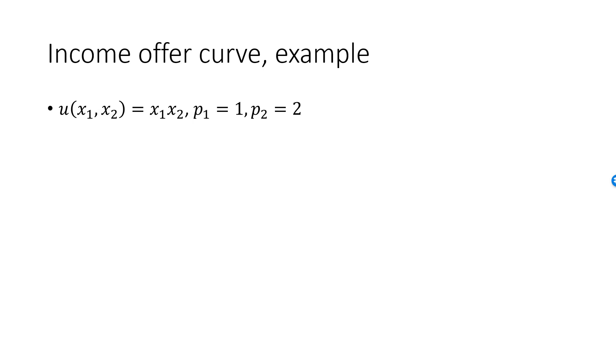This is the Cobb-Douglas utility function with exponents 1 and 1. Therefore, the optimal choice is given by X1 equal to M divided by 2P1, which is M over 2. The optimal choice of X2 is M divided by 2P2, which is M over 4. As you can see, the optimal choice of X2 is always half of the optimal choice of X1.